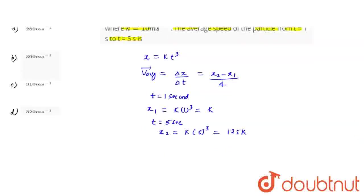Value of k is also given in the problem. If we put this value in equation number 1, we can say that average velocity can be given as x2 minus x1, right? 125k minus k, divided over 4. So this can be written as 124 into k, and the value of k given is 10, divided over 4.